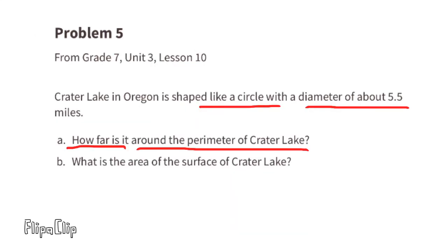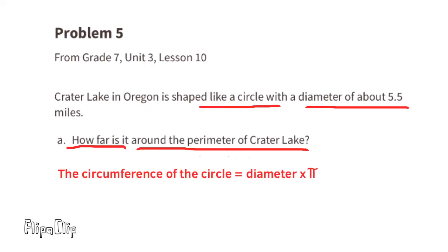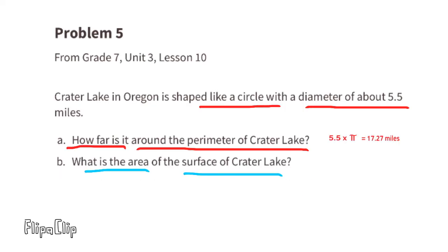Problem number five, from seventh grade unit 3 lesson 10: Crater Lake in Oregon is shaped like a circle with a diameter of about 5.5 miles. Part a — how far is it around the perimeter of Crater Lake? The circumference of a circle is diameter times pi, so 5.5 times pi equals approximately 17.27 miles.